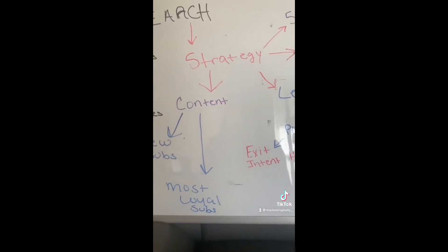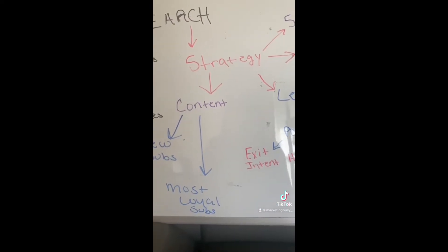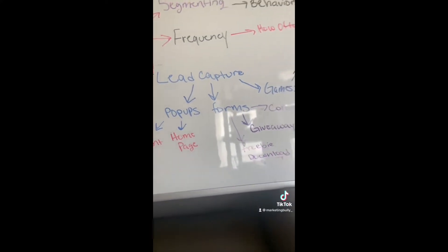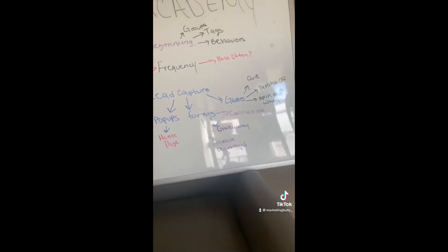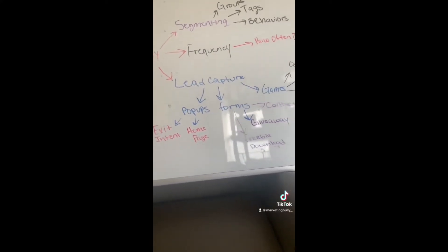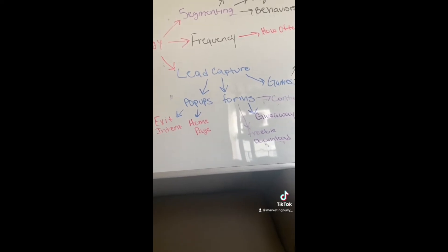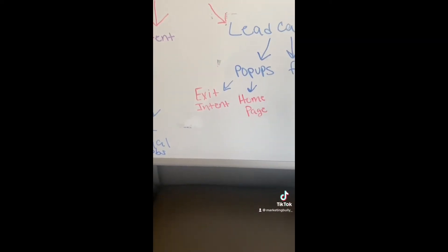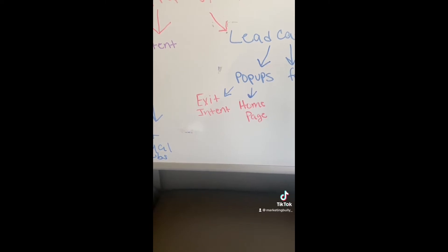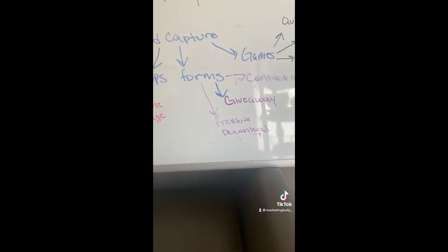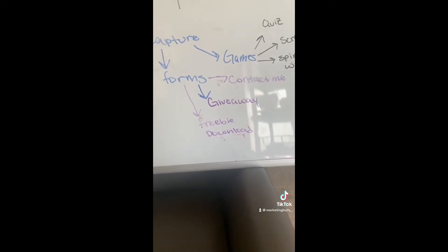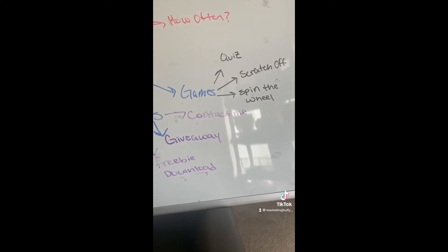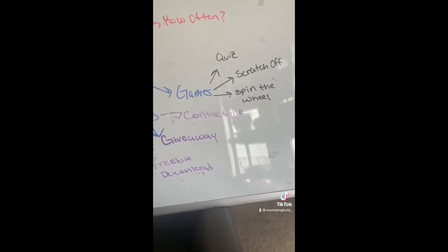Once you do that, you're ready to start the strategy portion. I like to start with planning out my lead captures, because there are so many different components and things to do. In the lead captures, you have pop-ups, forms, and games. For pop-ups, I like to do exit intent pop-ups and homepage pop-ups. For forms, they include contact me, giveaway, and freebie downloads. And then for games, you have quizzes, scratch-offs, and spin the wheel.